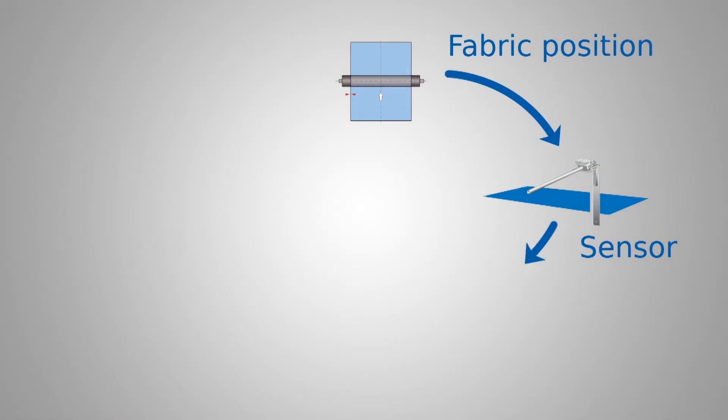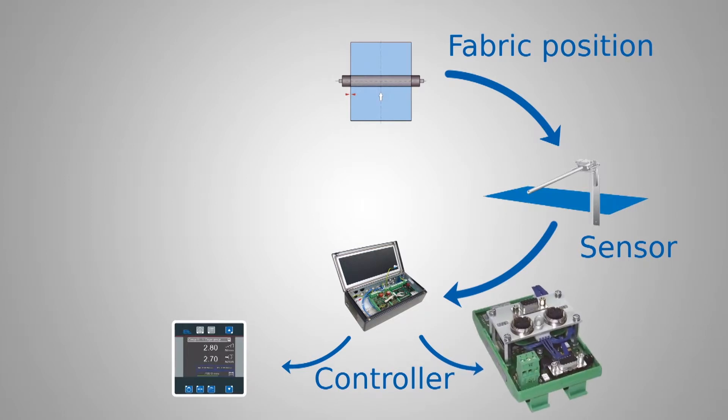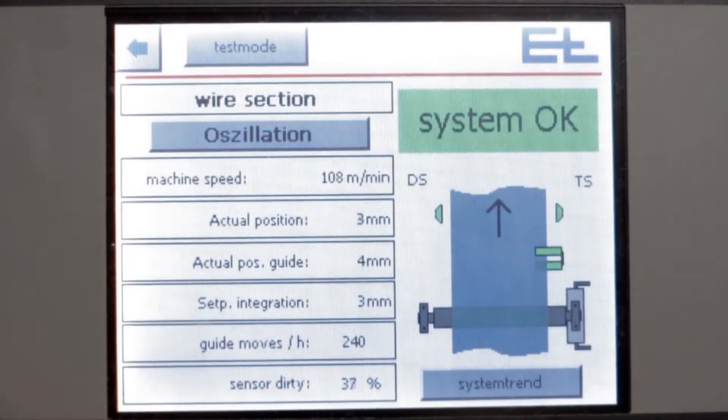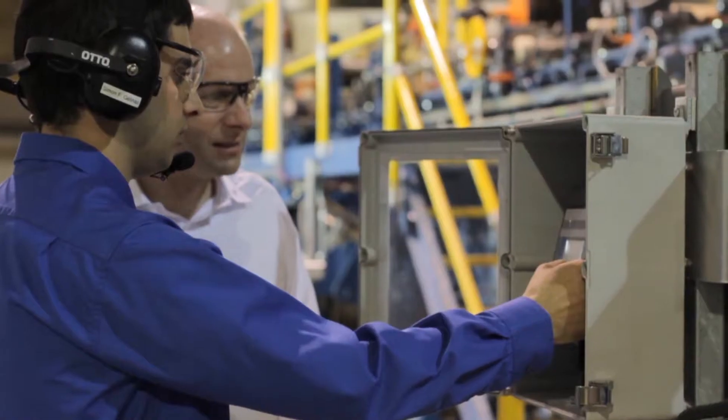Your one-stop solution - Erhard & Leimer also supplies control units, command stations, and interfaces for various bus systems. The graphical user interface with touch screen is designed for simple and intuitive use by the operator.